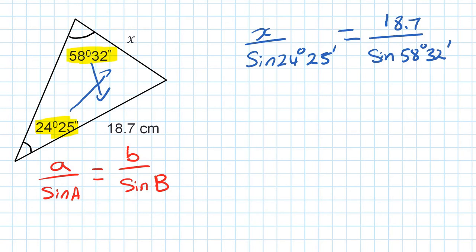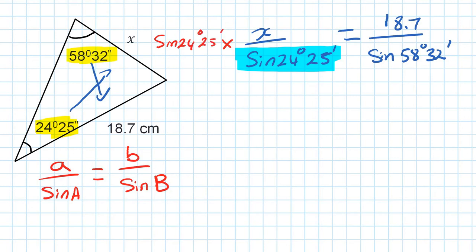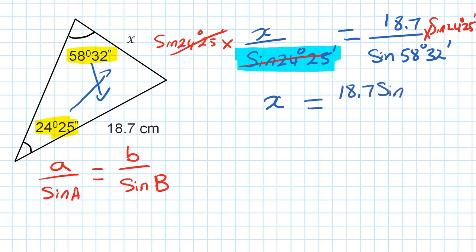Now we need to get rid of sine of 24 degrees 25 minutes, so we multiply both sides by sine of 24 degrees 25 minutes. This cancels out, and we get x is equal to 18.7 times sine of 24 degrees 25 minutes, all over sine of 58 degrees 32 minutes.